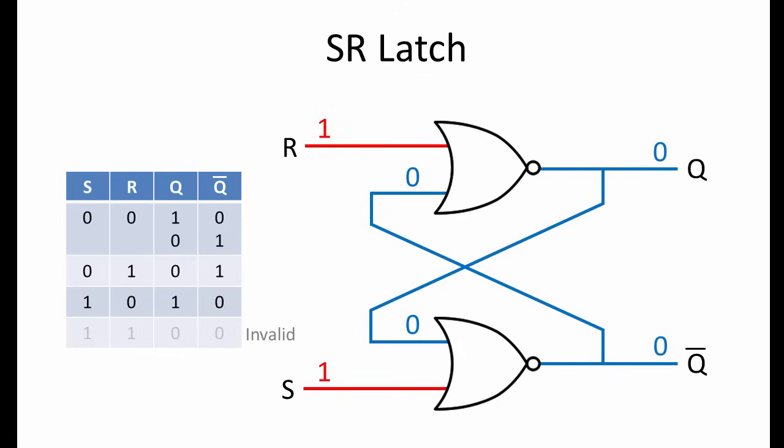Most of the time, inputs S and R should both be at 0, and only momentarily will one or the other input become 1. And at any time while it's operating, the SR latch should either be in a set state or a reset state, with Q and not Q the opposite of each other.